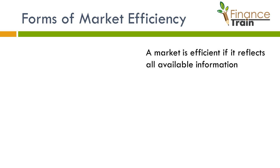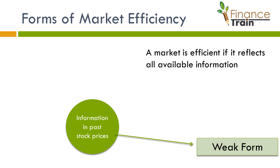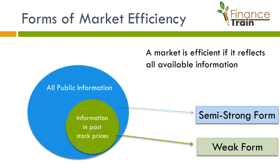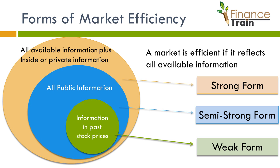Based on the degree of information available, there are three forms of market efficiency. The weak form states that current stock prices fully reflect all past market data, so the trader cannot forecast future stock prices based on past stock prices. The semi-strong form states that current stock prices reflect all publicly available information, including past information — the semi-strong form encompasses the weak form. The strong form states that stock prices incorporate all information available about the stock, including public and private information. So, if a market is strong form efficient, even traders with insider information cannot take advantage of their information to make abnormal profits.